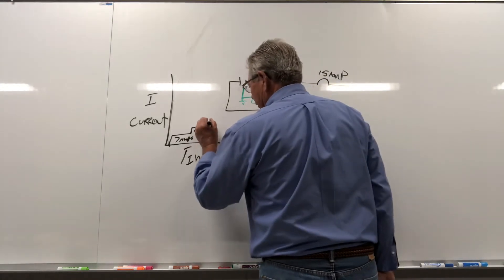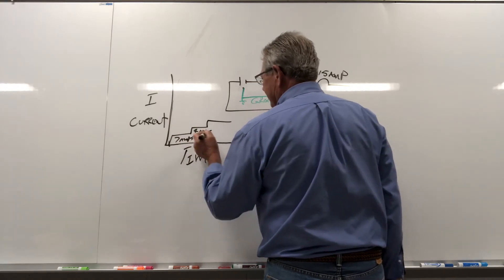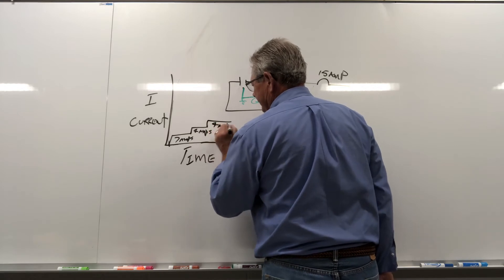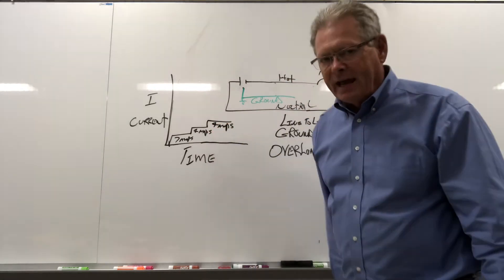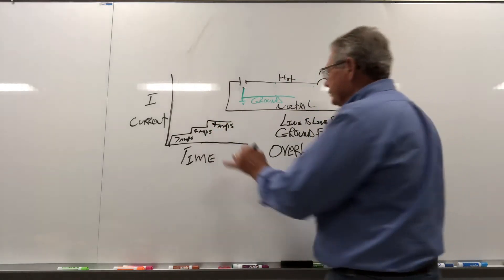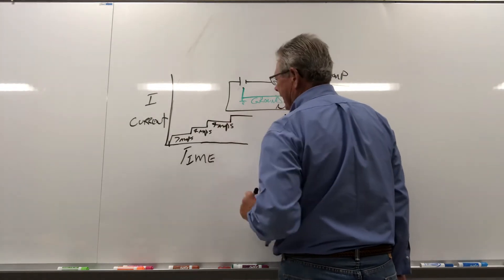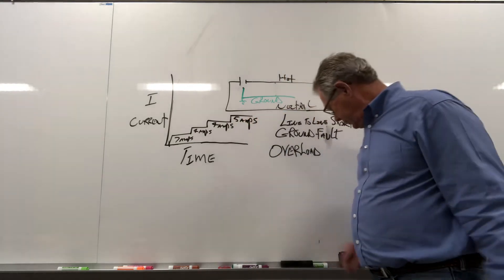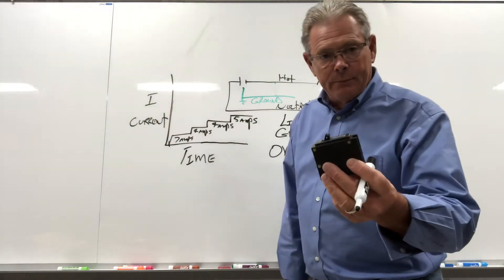There's 15 amps. So guess what happens when the next person pulls up, and it pulls 5 amps. There's 20 amps on a 15-amp breaker.